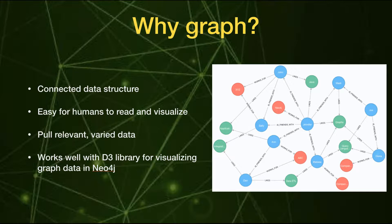It's also very easy for humans to read and visualize. On the right-hand side is a small graph of people who work for particular companies and like particular technologies. You can see my node in the center with many connections, and you could recommend someone to meet another person based on shared interests — for example, Ann can introduce Dan to Jennifer because Ann is their middle connection.